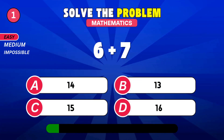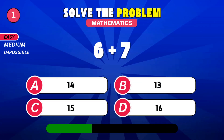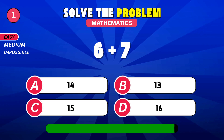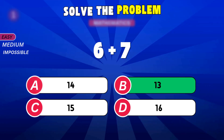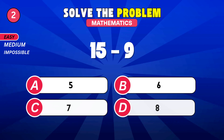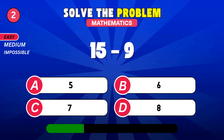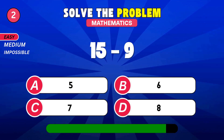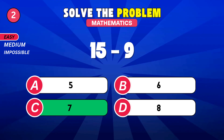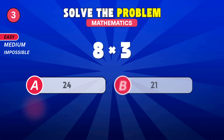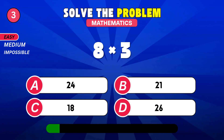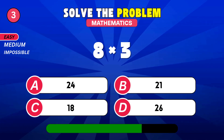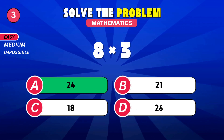What is 6 plus 7? 13. This is so simple. What is 8 times 3? 24.